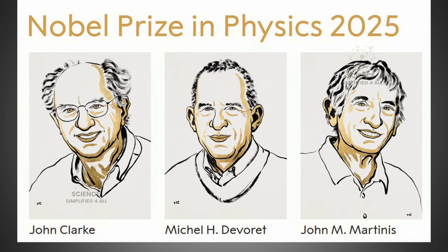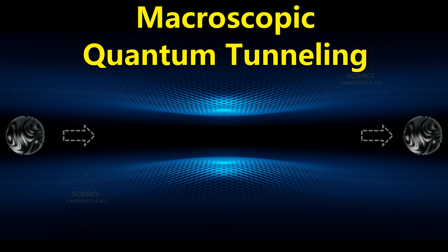The 2025 Nobel Prize in Physics was awarded to John Clark, Michel DeVore, and John Martinis for demonstrating quantum tunneling on a macroscopic scale. But what exactly does that mean?